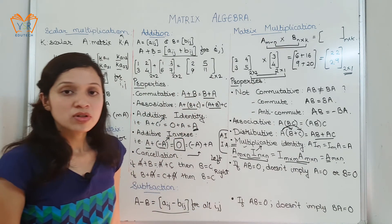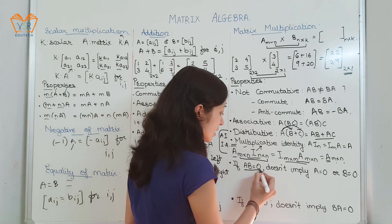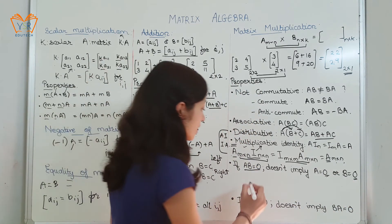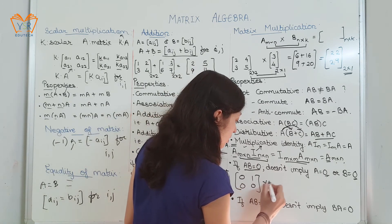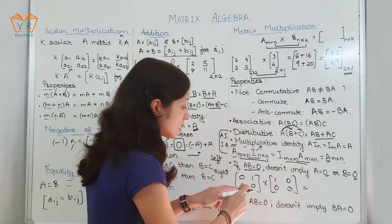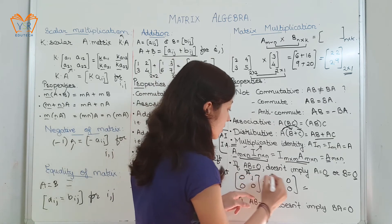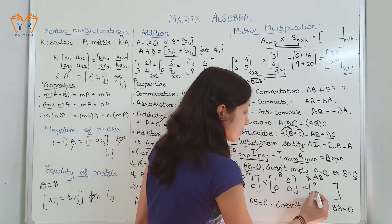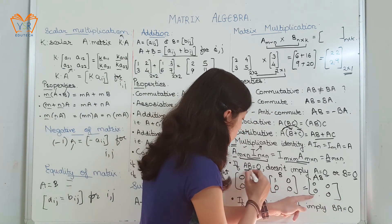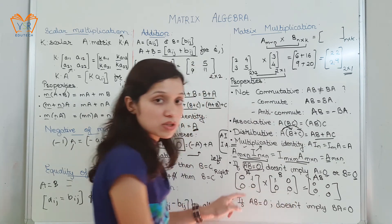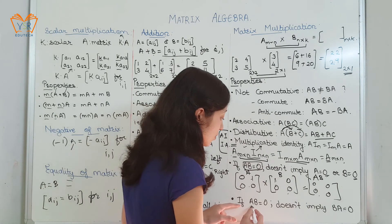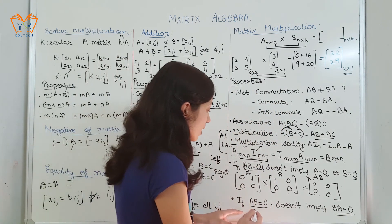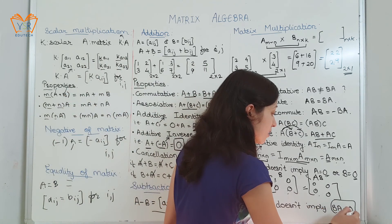The last two points are not properties — just for your information. First, if matrix multiplication gives A×B equal to 0, it does not necessarily mean that either matrix is equal to 0. For example, if A equals [[0,1],[0,0]] and B equals [[1,0],[0,0]], multiplying them gives the null matrix, yet A is not equal to 0 and B is not equal to 0. Second, if A×B equals 0, it does not necessarily mean that B×A is also equal to 0.